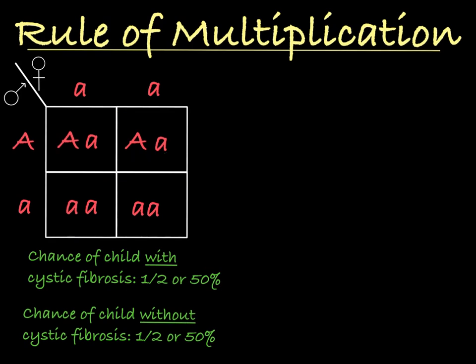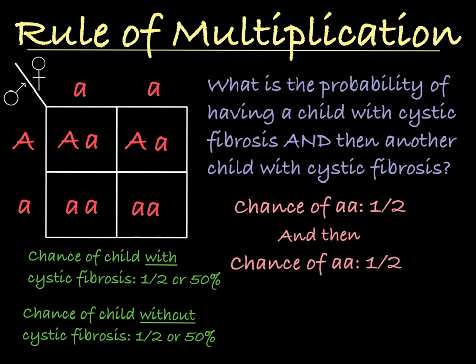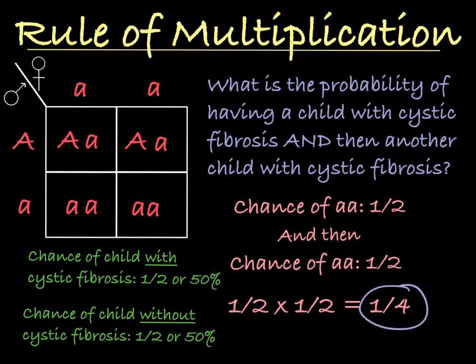If I ask what the probability is that they have two children with cystic fibrosis, that question is asking what the probability is that they have a child with cystic fibrosis and then another child with cystic fibrosis. So I would multiply these probabilities together — one-half times one-half — which is one-fourth, or 25%. That is their probability of having two children with cystic fibrosis.